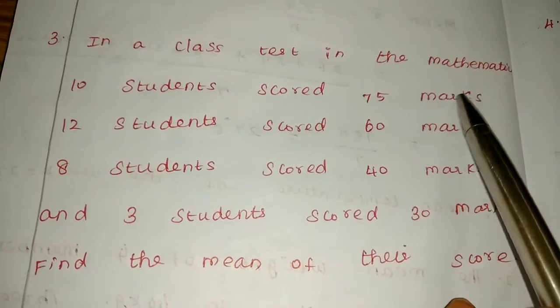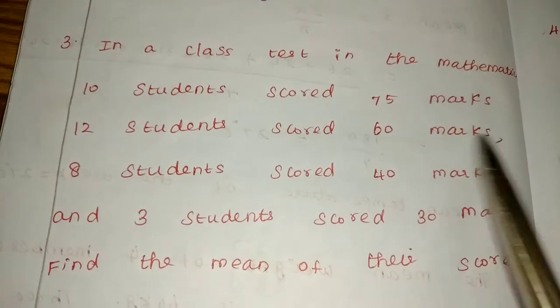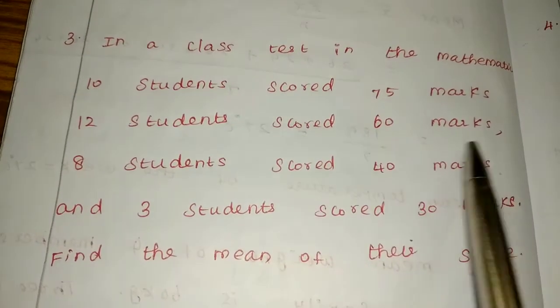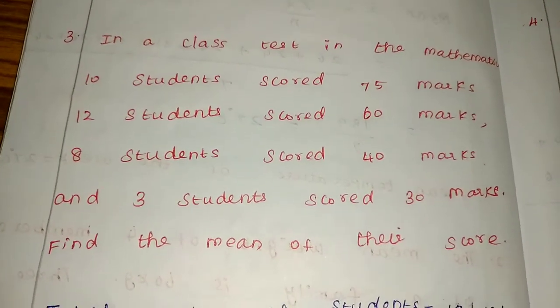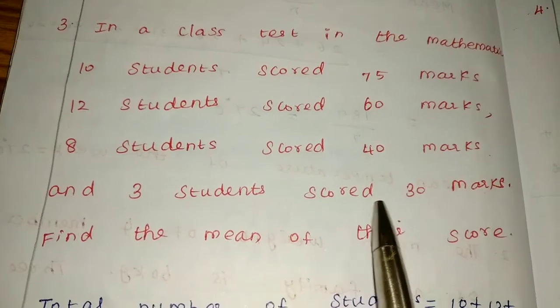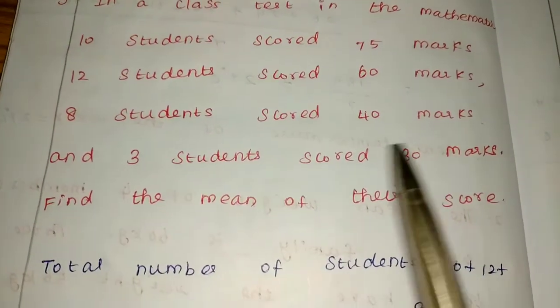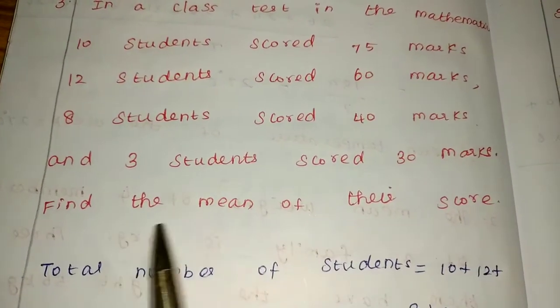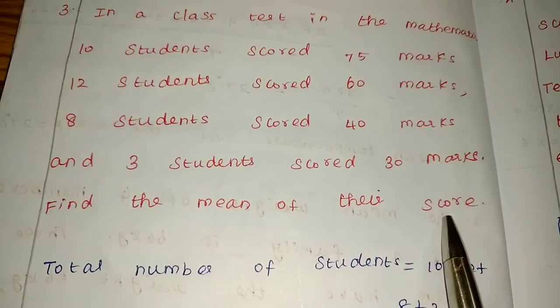In a class in Mathematics, 10 students scored 75 marks, 12 students scored 60 marks, 8 students scored 40 marks, and 3 students scored 30 marks. What do we need to find? The mean of their scores.